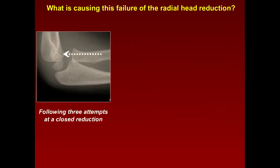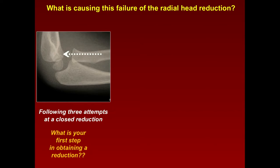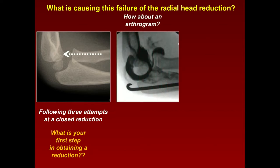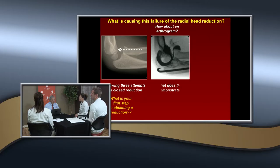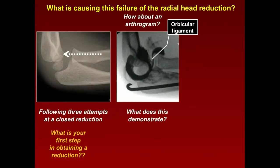Here's a patient that had three attempts at closed reduction. The ulna has been reestablished in length — what's your next approach? Before you just reduce, you evaluate on a lateral x-ray. Then you might do an arthrogram. What do you see in this arthrogram? The radial head is not reduced — there's interposed tissue right there. You can see the orbicular ligament is interposed.